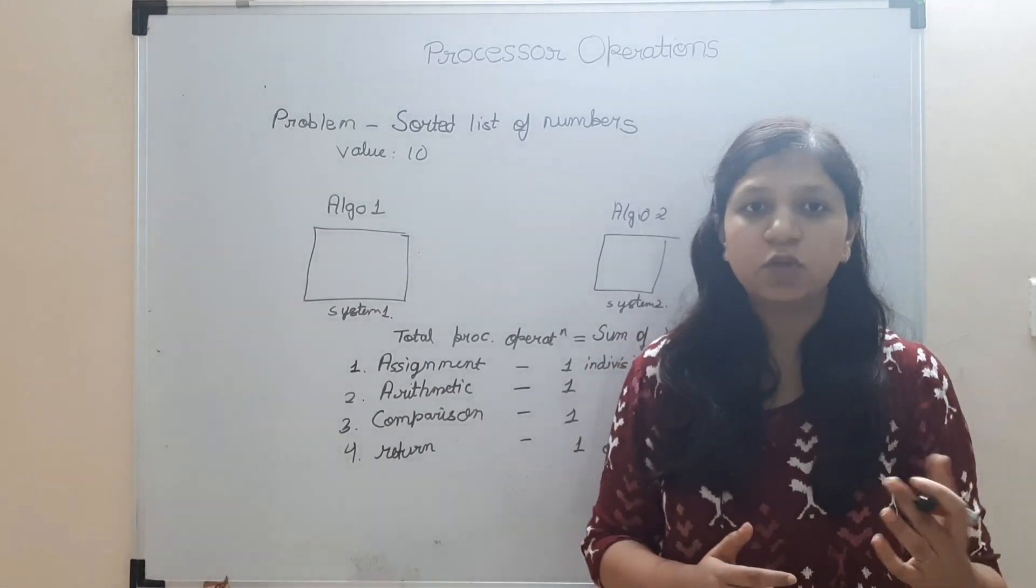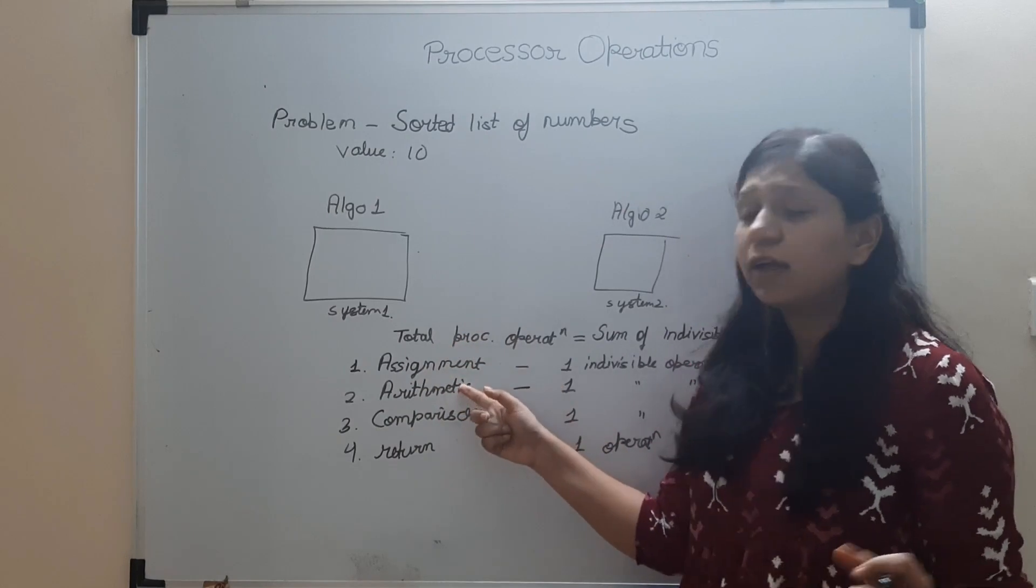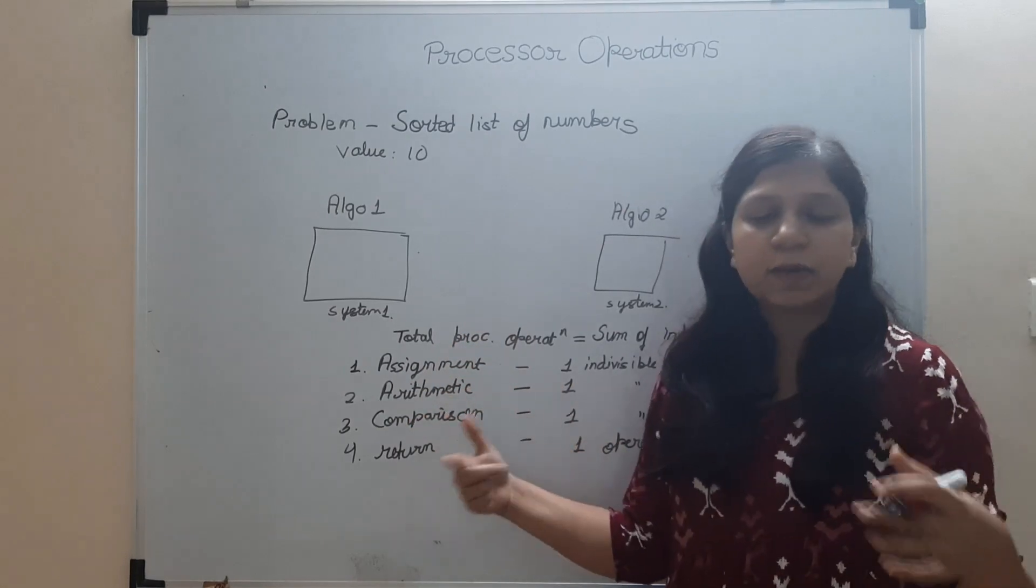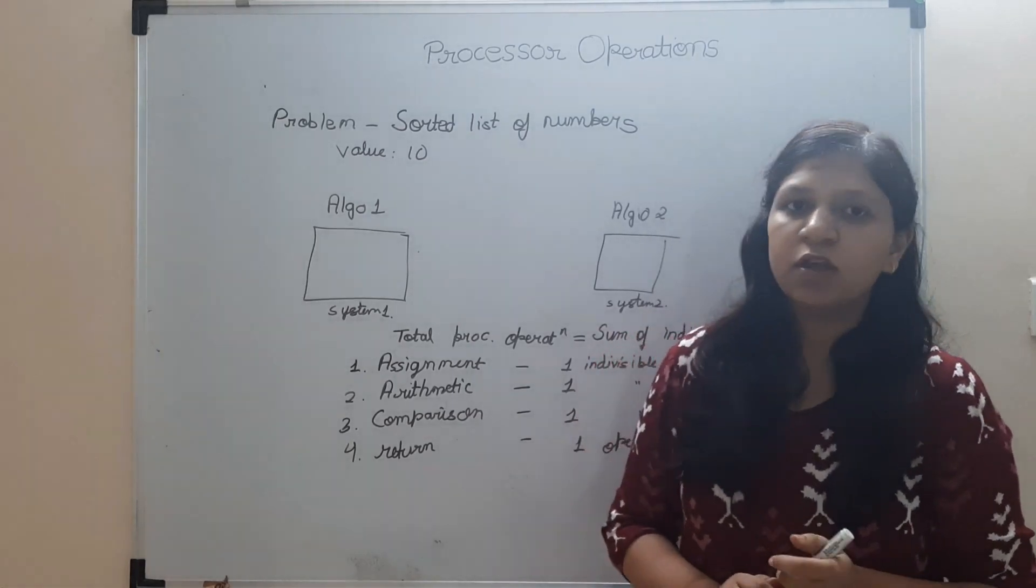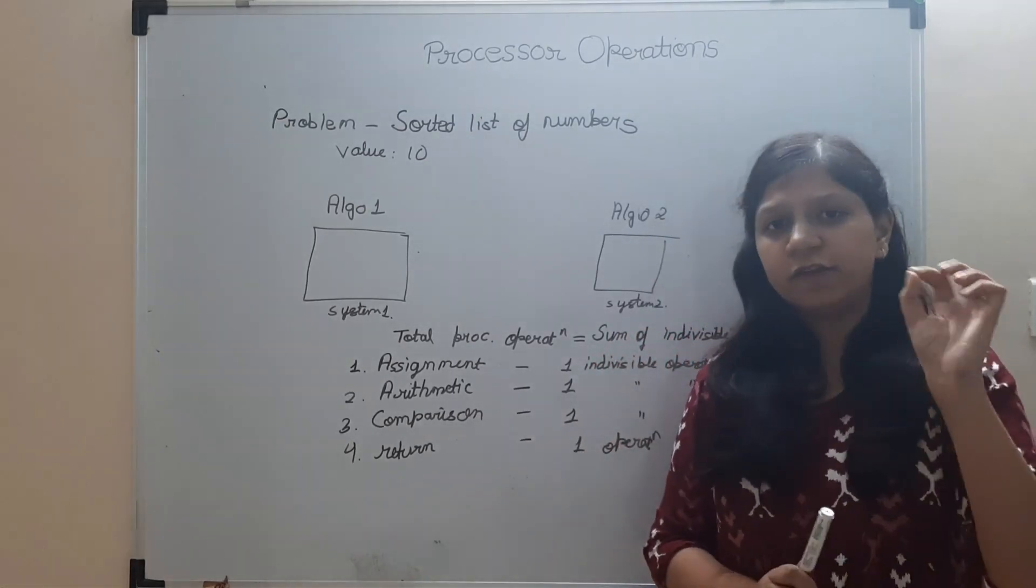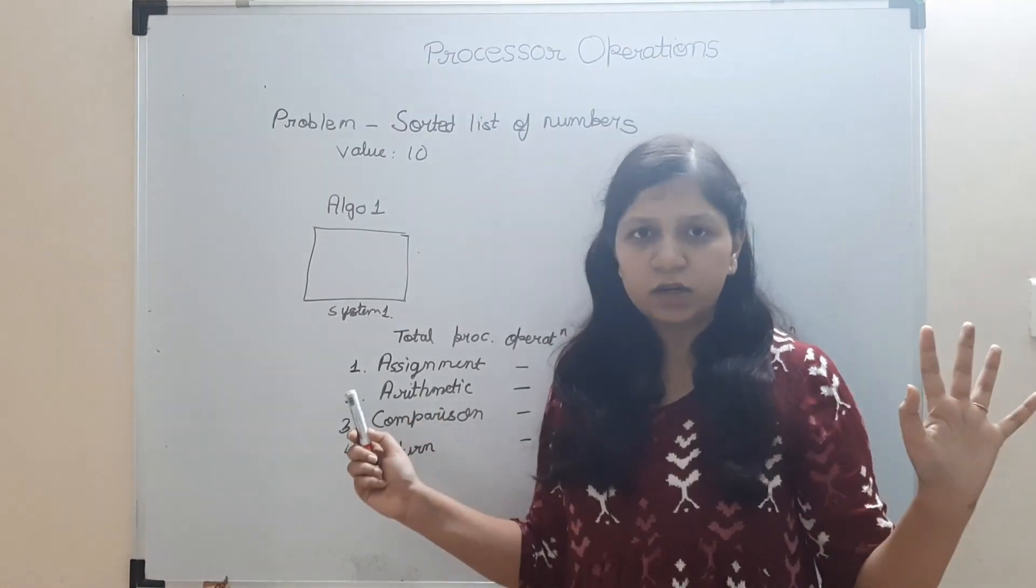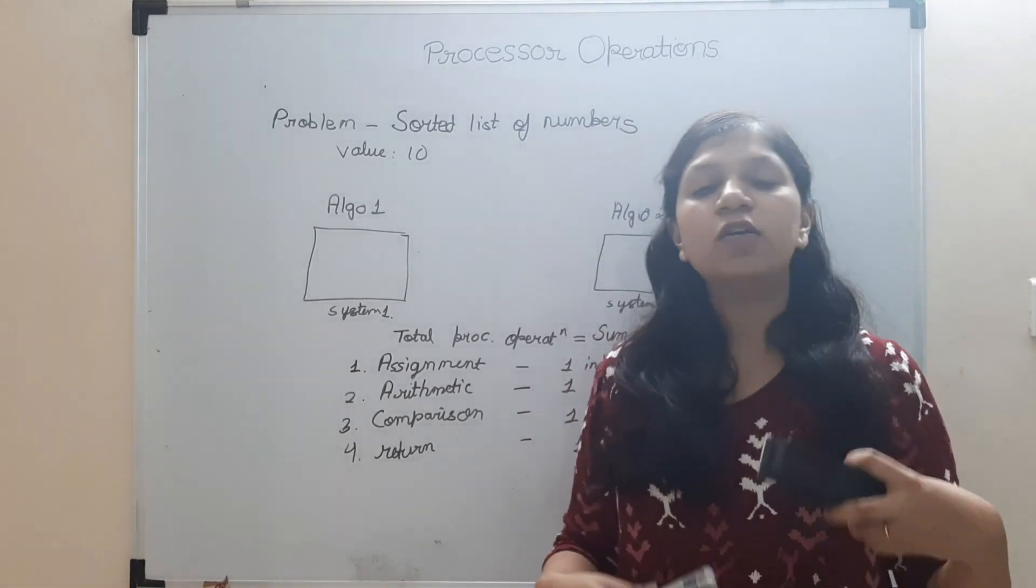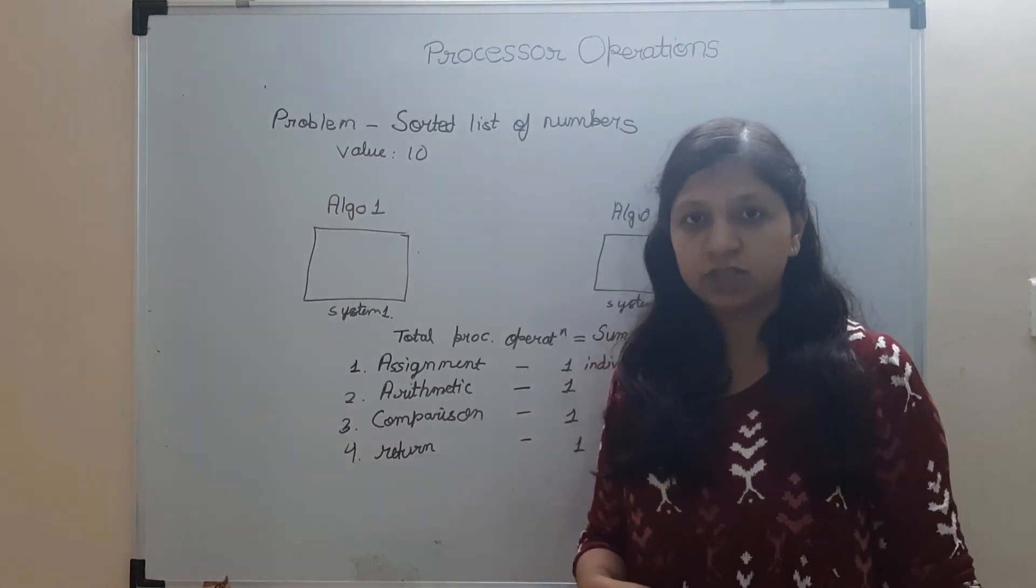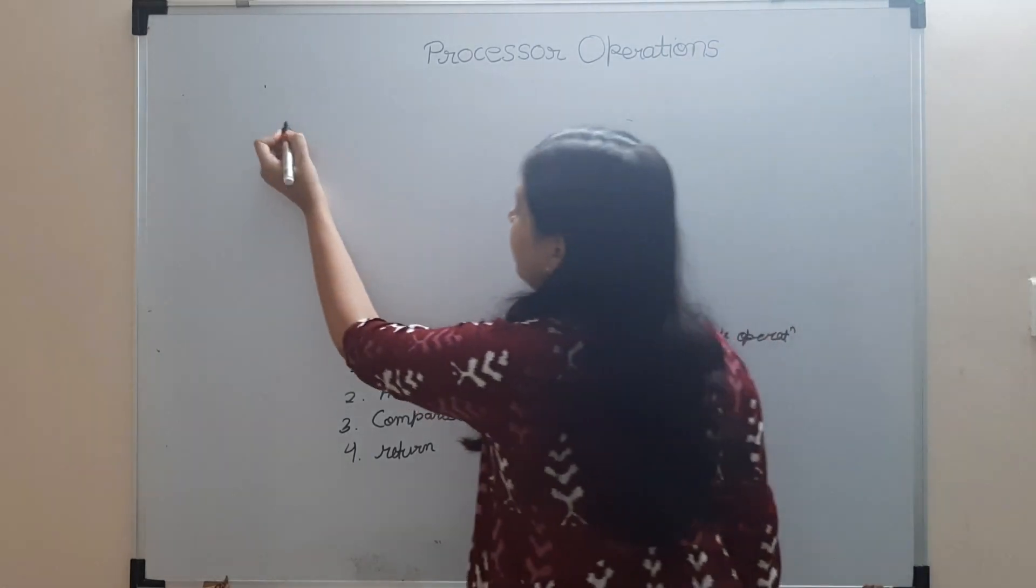That's how you calculate processor operations. Those are independent of the system. These things - assignment, arithmetic, comparison - those are going to take one processor operation. This is what one indivisible operation is, that is taken by the processor once. Now you understood this. Let's take some examples so that if I give you code, you will be able to see what number of processor operations it took, and that's how we compare algos.